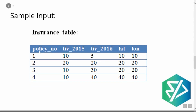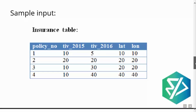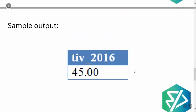This is the sample input. We have policy numbers 1, 2, 3, and 4. The TIV in 2015 values are 10, 20, 10, and 10. The TIV in 2016 values are 5, 20, 30, and 40. Each policy number has different latitude and longitude values, representing different policyholder locations. The sample output is 45.00.